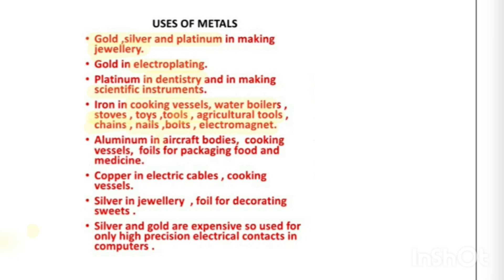Iron is also used in making chains, nails, bolts, and electromagnets. Aluminum, being a very light metal, is used in making aircraft bodies and cooking vessels. In the kitchen, we often use aluminum as thin foils for packaging food and medicines. Copper is widely used in making electrical wires and cables, and also in cooking vessels.